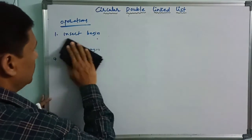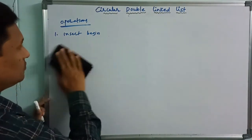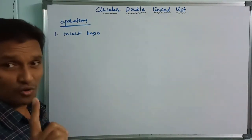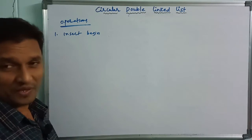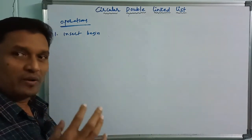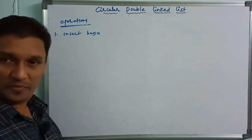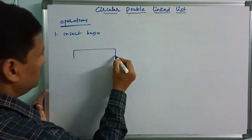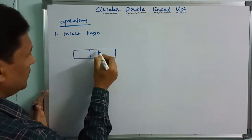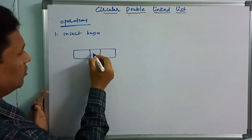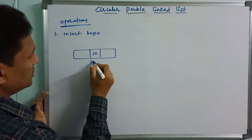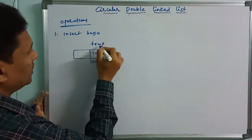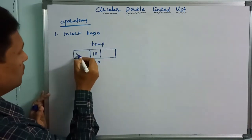First: insert begin. We create a new node. For example, we have data value 10. The address will be initialized. Both links — previous and next — are null for the first element.